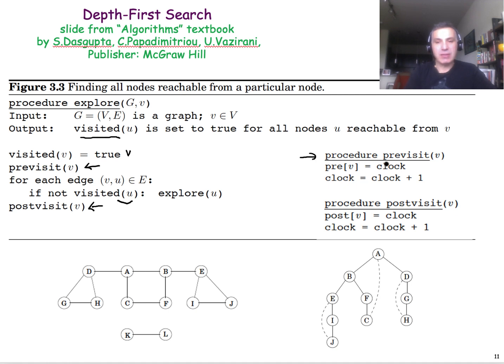As you see, they are basically just timestamping with this variable clock. We create a timestamp for when node V essentially is pushed into the stack, and with the post-visit function, we create another timestamp for the time that we pop the node out of the stack.